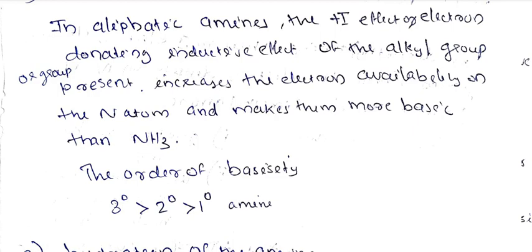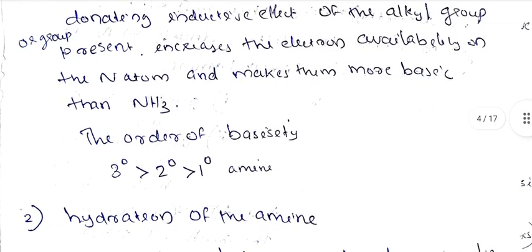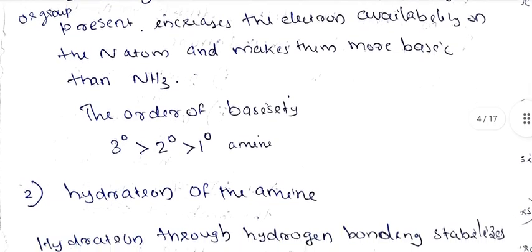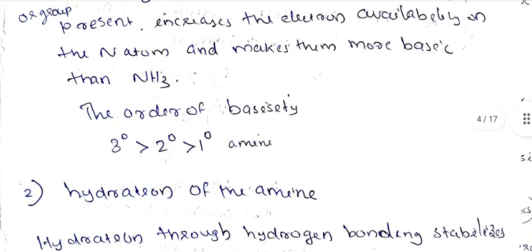Secondary amine has two R groups, and primary amine has a single R group. So based on the inductive effect, the order is: tertiary greater than secondary greater than primary.